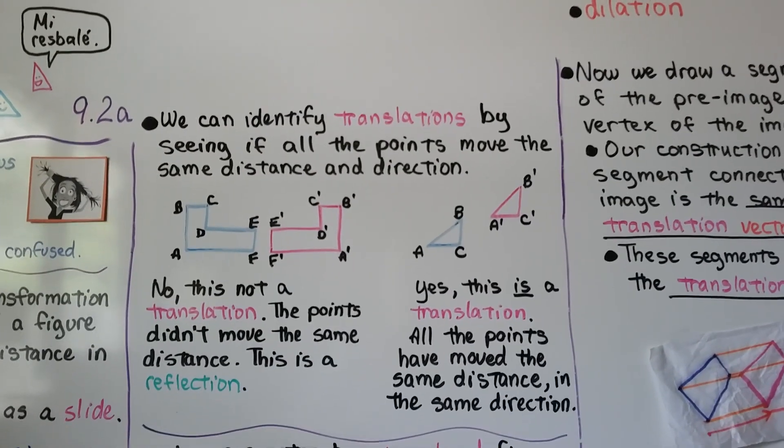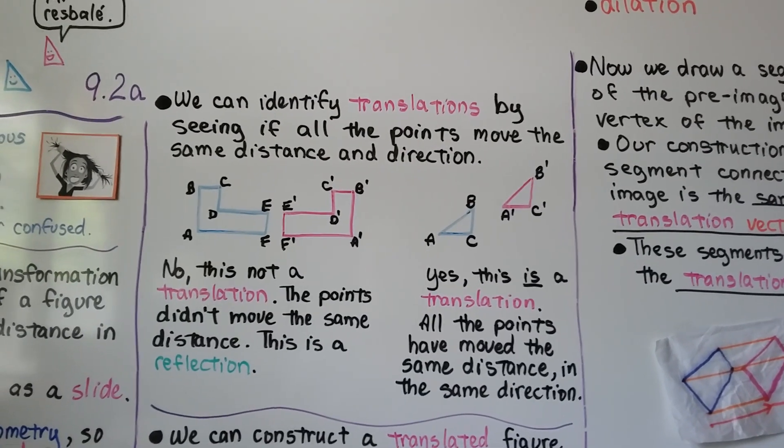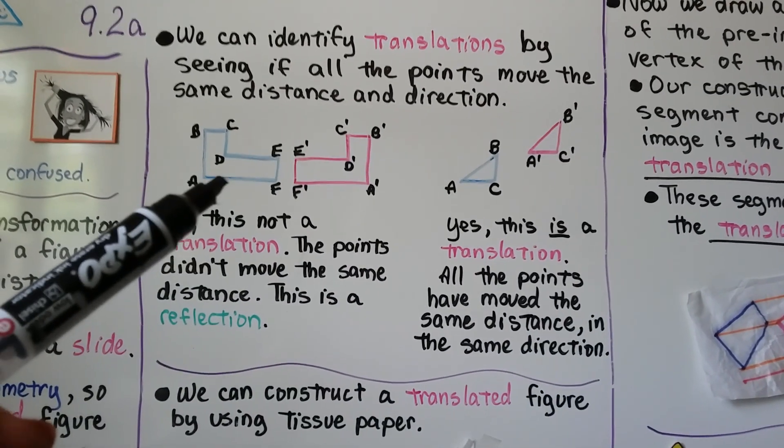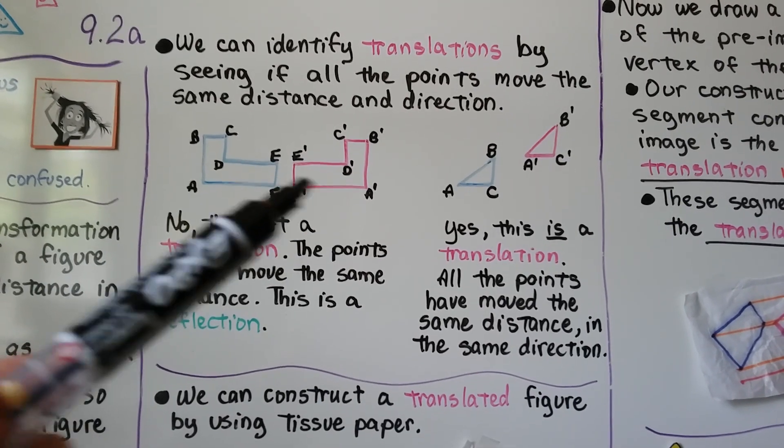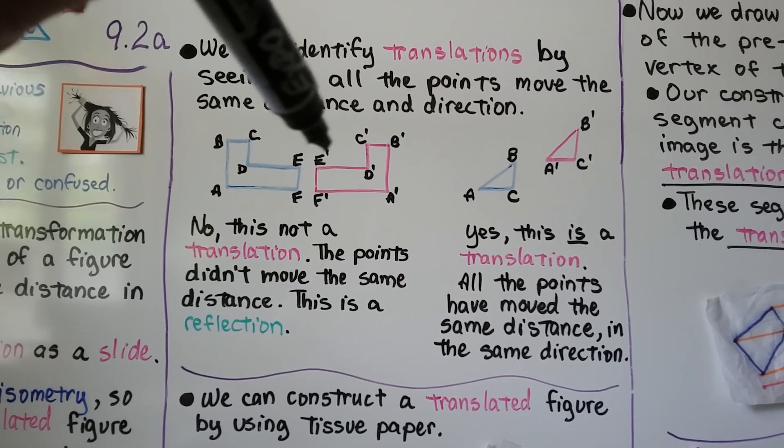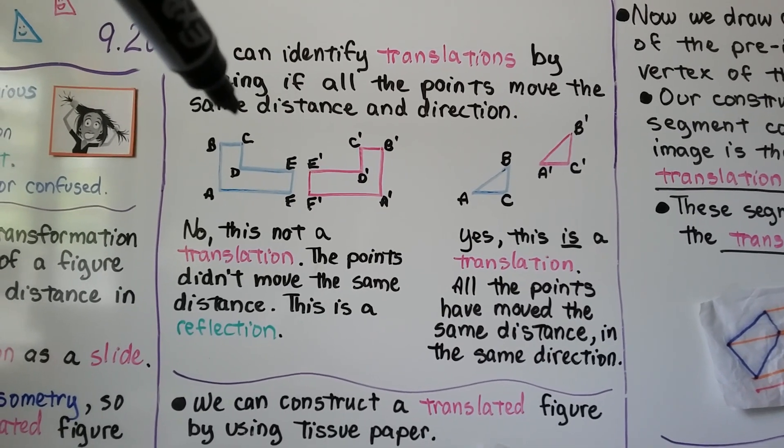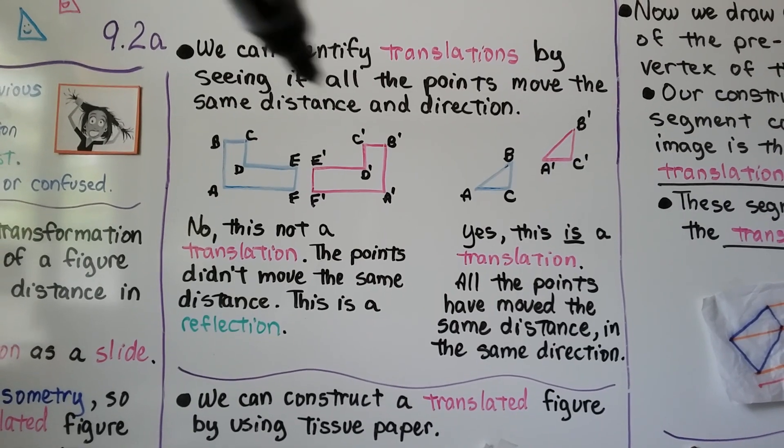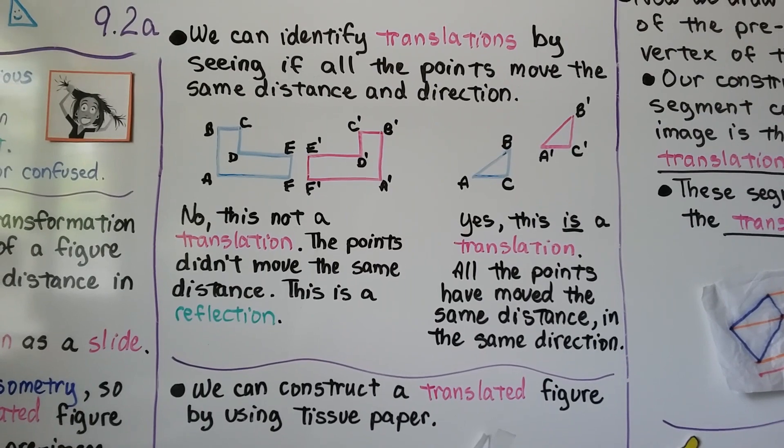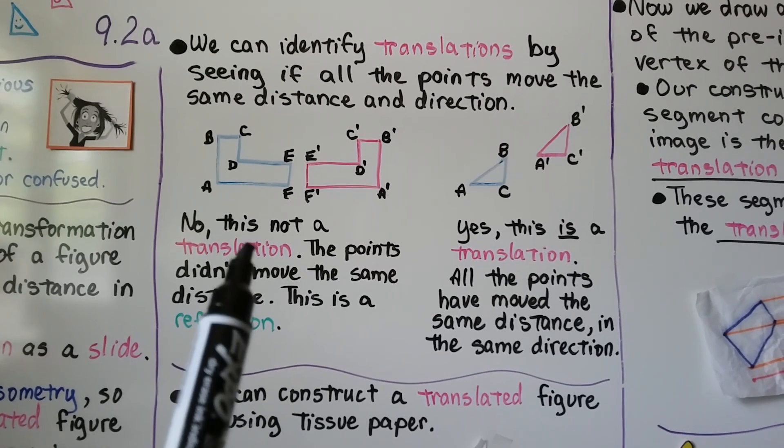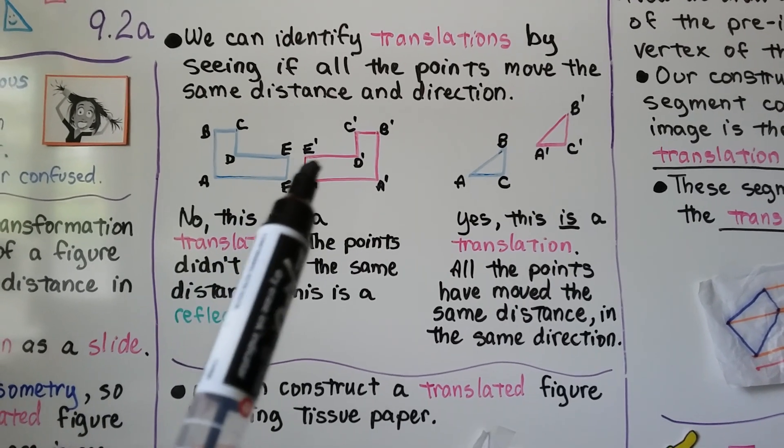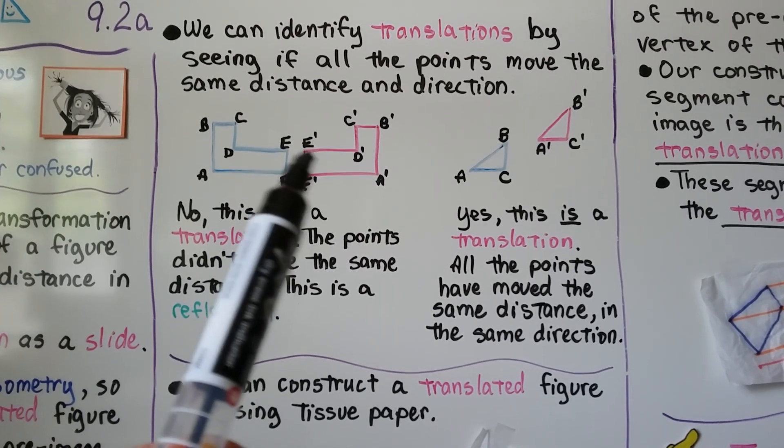We can identify translations by seeing if all the points move the same distance and direction. If you look at this blue figure compared to this pink one, look at E and E prime. Look at the distance between E and E prime. Then look at the distance between C and C prime. No, this is not a translation. The points didn't move the same distance. If it were a translation, then C would have moved the same distance as E to E prime.